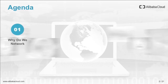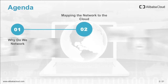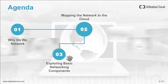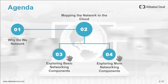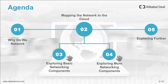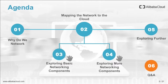To begin with, we are going to talk about why we create computer networks in the first place. Then we will look at the basic elements of a computer network and how they map to cloud network. We will explore some basic networking components of Alibaba Cloud Network and do a brief demo session. Then we will look at some additional components. Towards the end, we will talk about some additional exploration areas and upcoming webinars. At the very end, there will be a question and answer session.